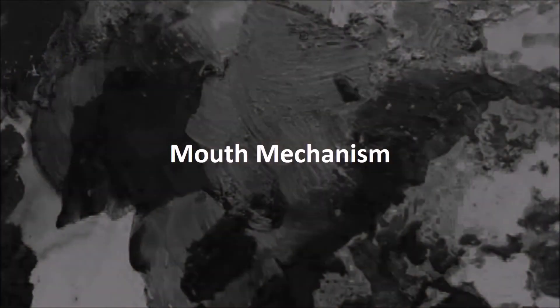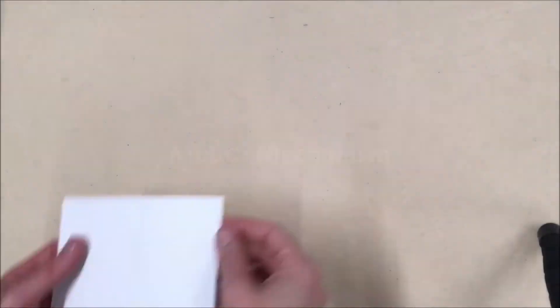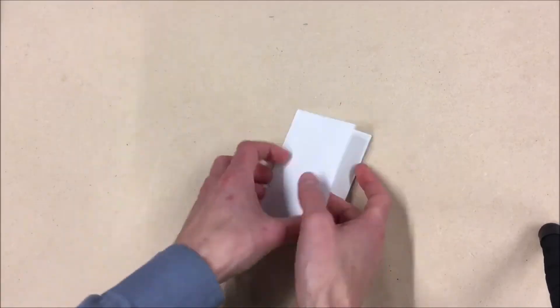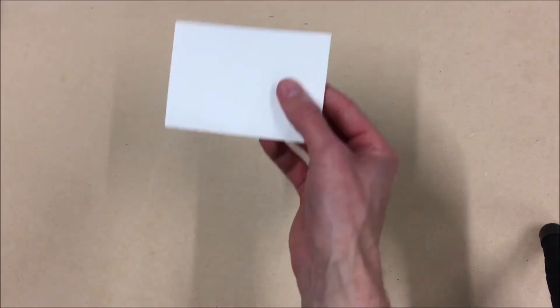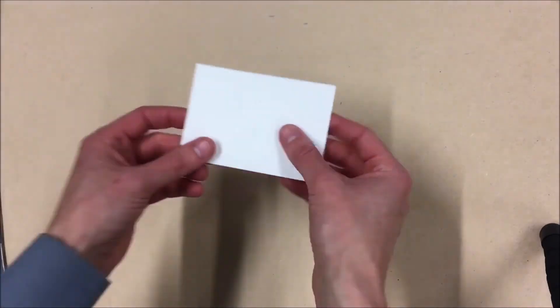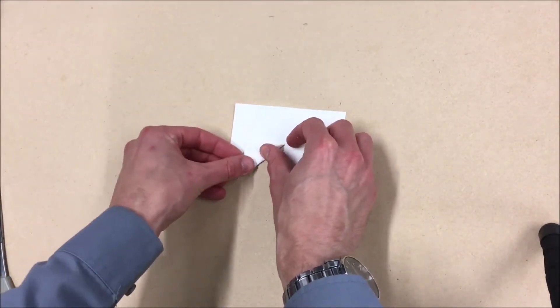Mouth Mechanism. Fold a piece of card landscape. And then in the middle of the spine, cut about a two centimeter line. Fold a triangular flap one way and one the other way.